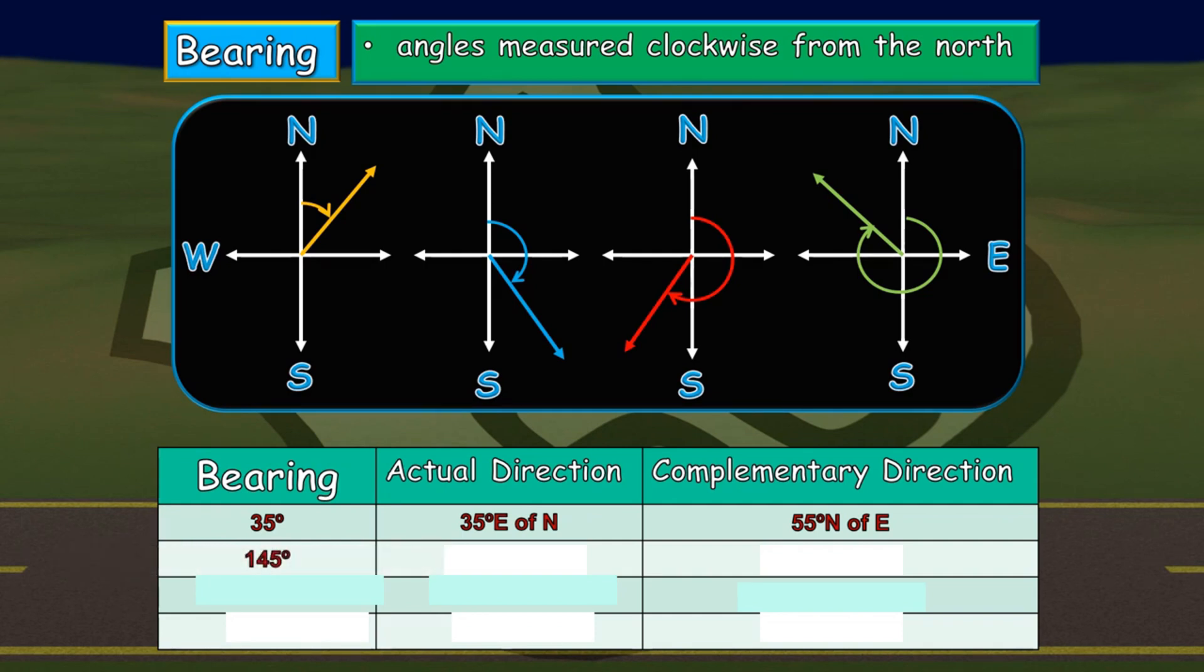How about if it is more than 90 degrees? If the bearing is more than 90 degrees, all we have to do to get the actual direction is to subtract it with 90. 145 minus 90, we have 55 degrees. Since the arrowhead and it is located at the fourth quadrant wherein the directions involved are south and east, and the arrowhead is pointing towards south, it will be 55 degrees south of east for our actual direction. And for our complementary direction, we just simply subtract 55 from 90 degrees. Therefore, we have 35 degrees east of south.